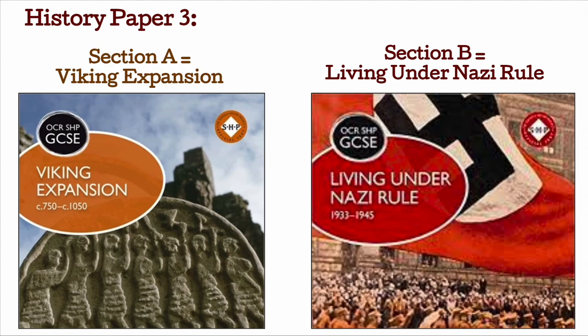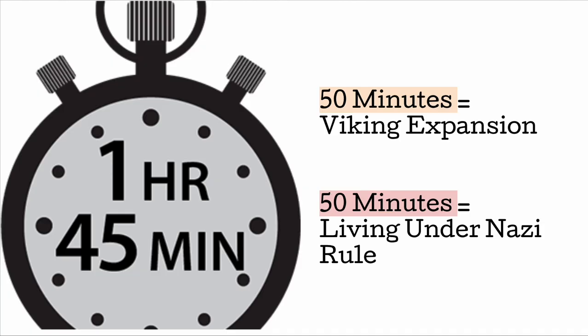This video is for History Paper 3. In your exam you're going to be given Section A and Section B. Section A is Viking Expansion and Section B will be Living Under Nazi Rule. You will be given 1 hour 45 minutes for this exam. We recommend that you spend 50 minutes on Viking Expansion and 50 minutes on Living Under Nazi Rule, so make sure you're managing your time wisely.